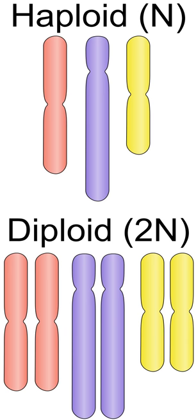Euploidy (Greek eu, 'true' or 'even') is the state of a cell or organism having one or more complete sets of the same chromosomes, possibly excluding sex-determining chromosomes. Most human cells have two of each of the 23 homologous monoploid chromosomes, for a total of 46. Euploid karyotypes are consequently a multiple of the haploid number, which in humans is 23. Aneuploidy is the state where one or more chromosomes of a normal set are missing or present in more than their usual number of copies; aneuploid karyotypes will not be a multiple of the haploid number. In humans, examples include having a single extra chromosome such as Down syndrome, or missing a chromosome such as Turner syndrome. Aneuploid karyotypes are given names with the suffix -somy rather than -ploidy, such as trisomy and monosomy.